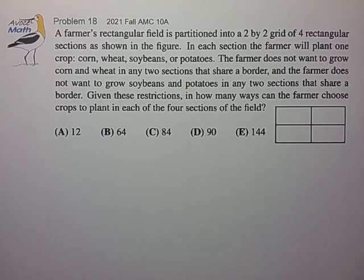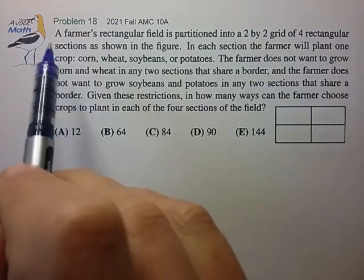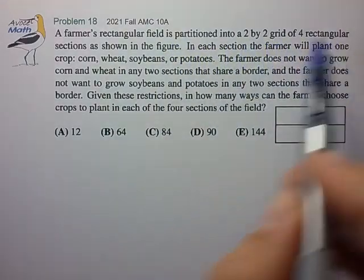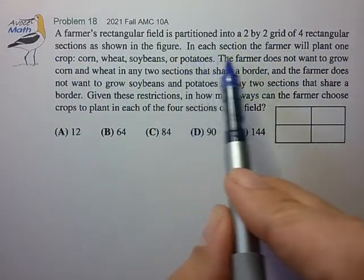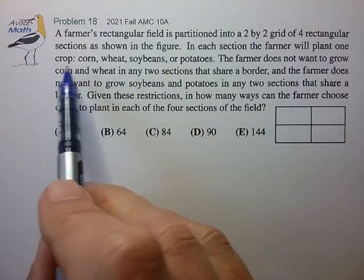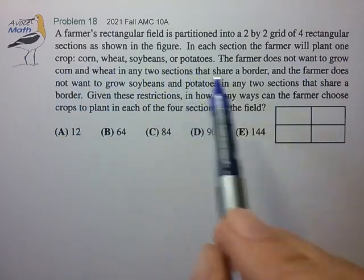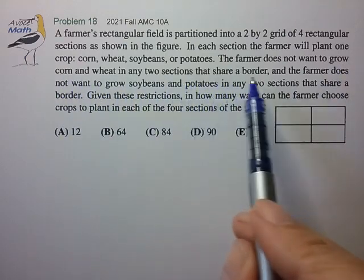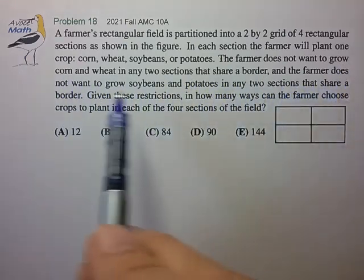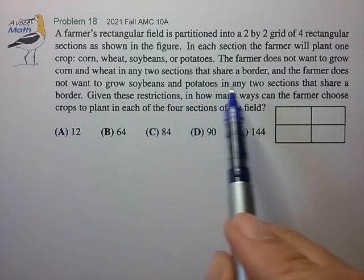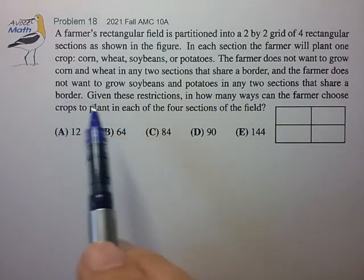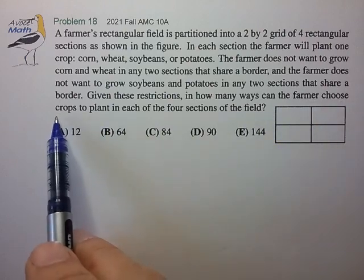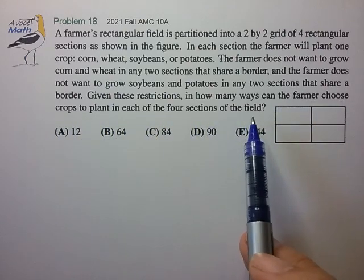Hi, this is problem 18 from the 2021 AMC 10A. A farmer's rectangular field is partitioned into a 2 by 2 grid of four rectangular sections. In each section, the farmer will plant one crop: corn, wheat, soybeans, or potatoes. The farmer does not want to grow corn and wheat in any two sections that share a border, and the farmer does not want to grow soybeans and potatoes in any two sections that share a border. Given these restrictions, in how many ways can the farmer choose crops to plant in each of the four sections of the field?